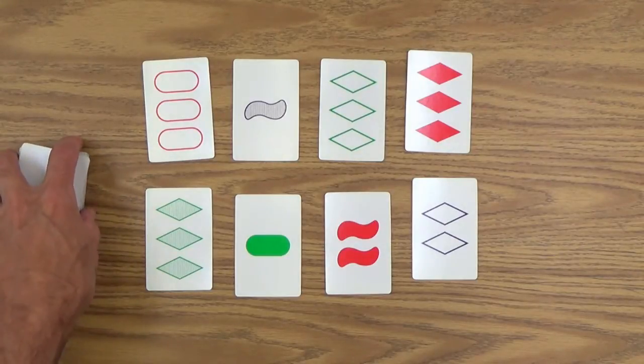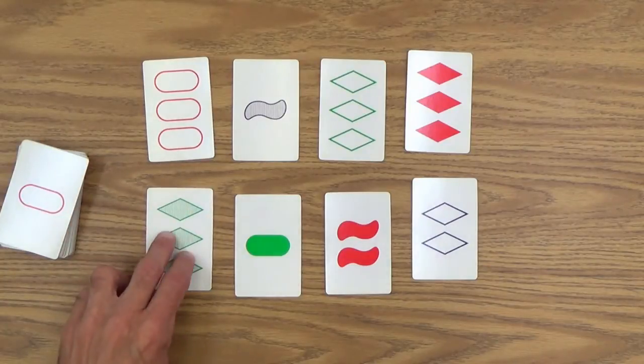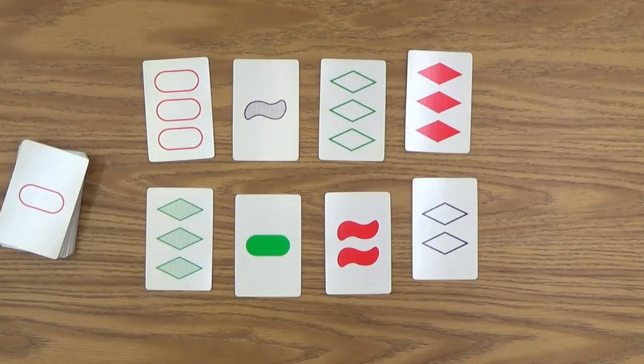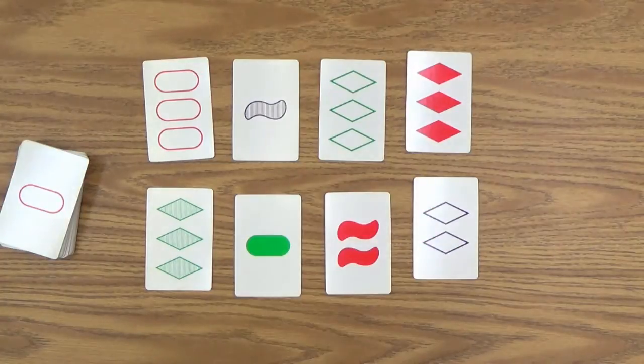Colors, as you can see, the symbols can either be red, green, or purple. A number. Each card has one, two, or three symbols on it.